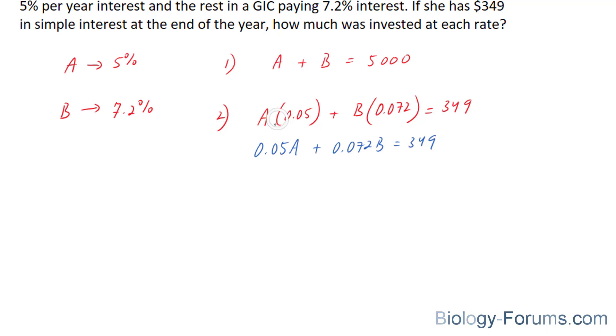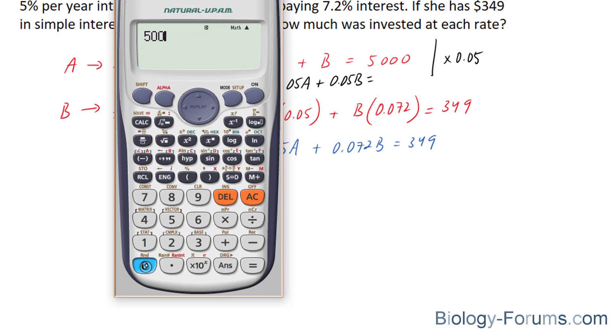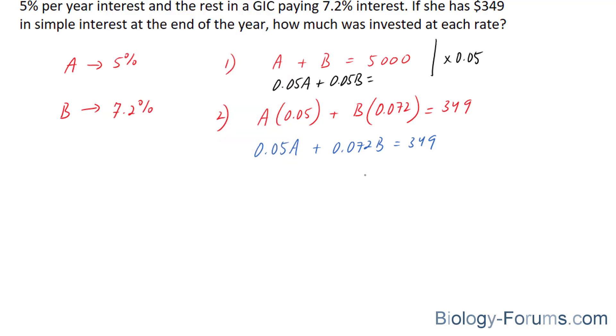Now, since we want to eliminate A, we have to make the coefficient in front of this A the same as that. So let's multiply this whole equation by 0.05. And if we do that, we end up with 0.05A plus 0.05B is equal to 5,000 times 0.05, and that gives us 250.